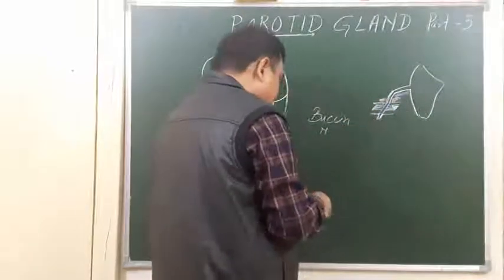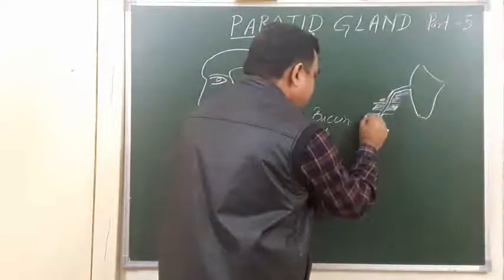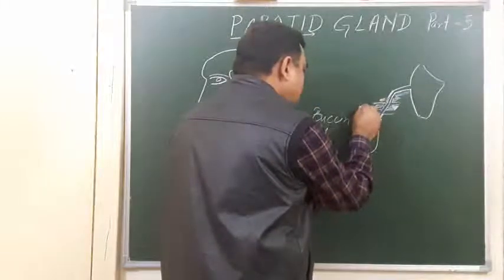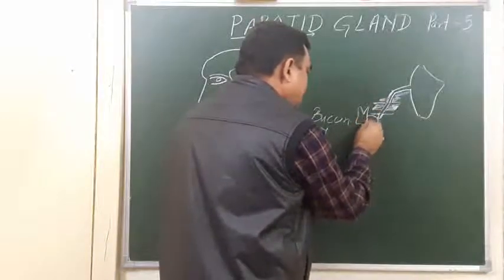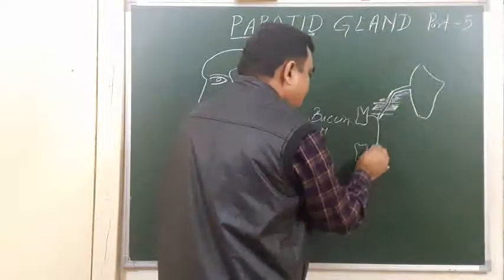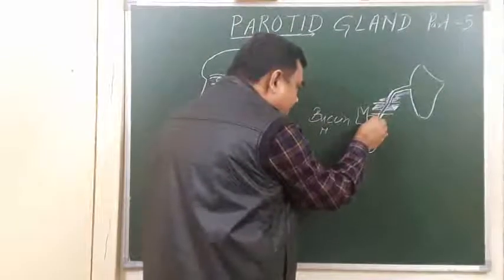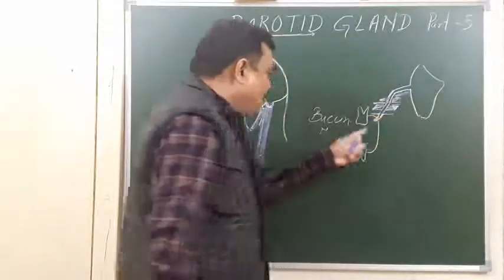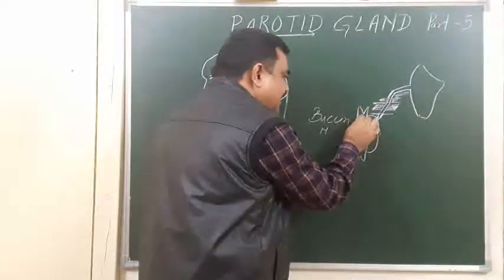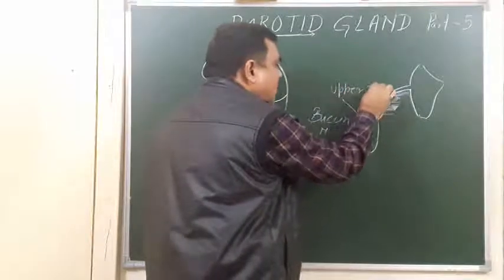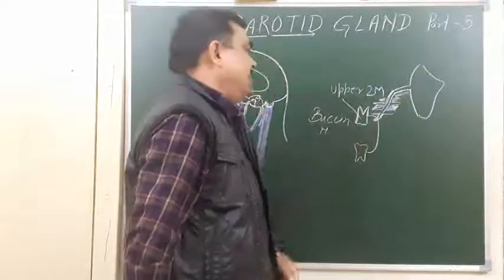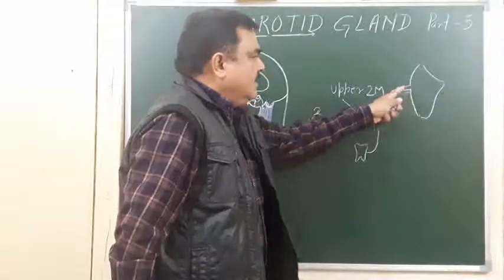Here is the position of the vestibule of the mouth. The duct opens into a papilla in the vestibule of the mouth at the level opposite the upper second molar tooth. This upper second molar tooth is shown here — the duct opens opposite to this tooth. So this is the complete pathway of the parotid duct.